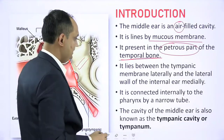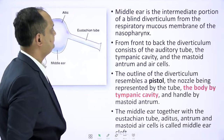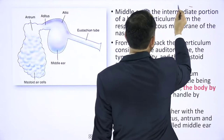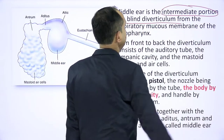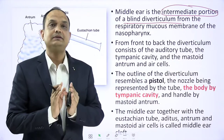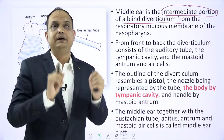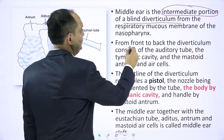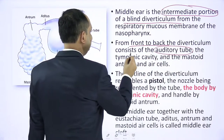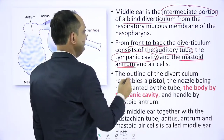The cavity of the middle ear is also known as the tympanic cavity or tympanum. When viewed as a whole, the middle ear is an intermediate portion of a blind diverticulum from the respiratory mucous membrane of the nasopharynx. From the nasopharynx a diverticulum arises and forms three parts. From front to back: the auditory tube, the tympanic cavity, and the most posterior part known as the mastoid antrum, which contains the air cells.